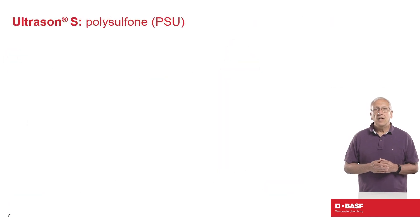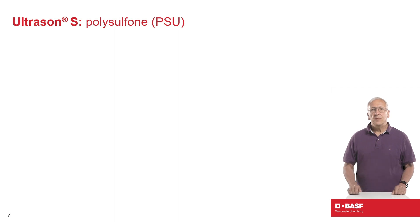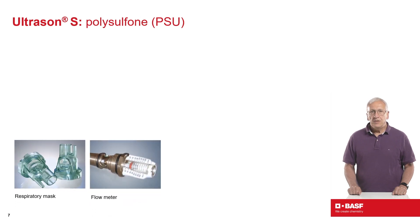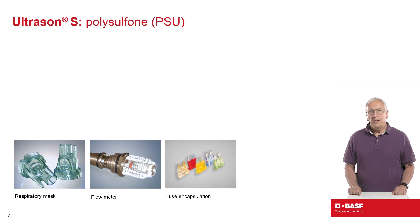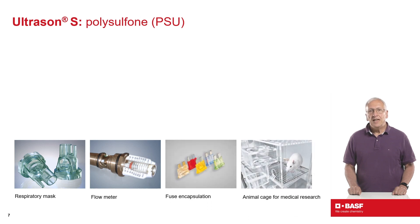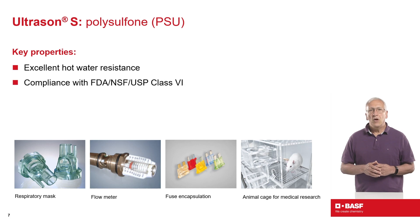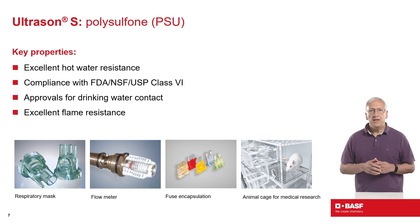Here are a few examples where Ultrason S polysulfone is used. The material has become a preferred choice for many healthcare-related components — flow meters, automotive fuses, and sterilizable animal cages used for research and development of new pharmaceutical products. The material provides excellent hot water resistance for washing and sterilization, compliance with all regulatory agencies including drinking water contact, and flame resistance.